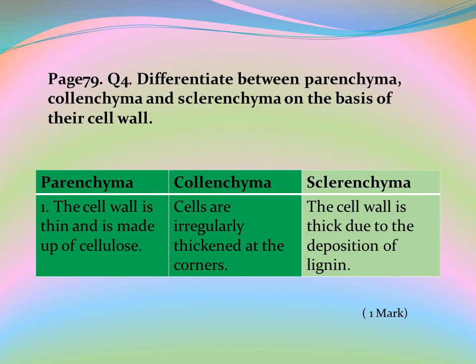Page 79, Question 4: Differentiate between parenchyma, colenchyma, and sclerenchyma on the basis of their cell wall. Answer: In parenchyma, the cell wall is thin and is made up of cellulose. In colenchyma, cells are irregularly thickened at the corners. In sclerenchyma, the cell wall is thick due to the deposition of lignin.